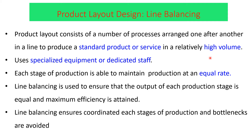Product layout uses specialized equipment or dedicated staff. Each stage of production is able to maintain a production rate at an equal rate. Line balancing is used to ensure that the output of each production stage is equal and achieves maximum efficiency.